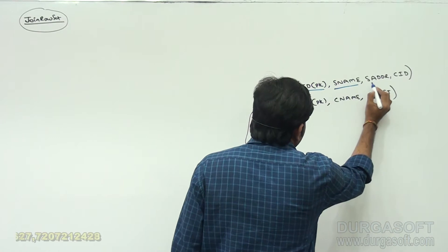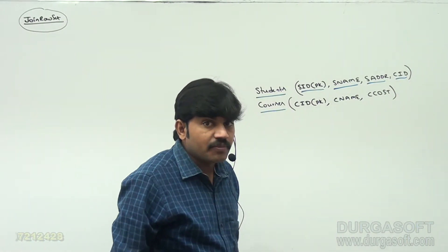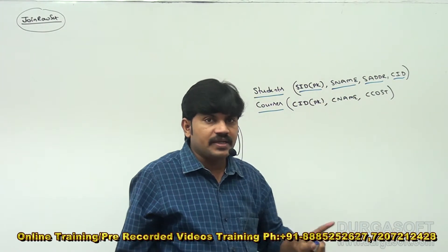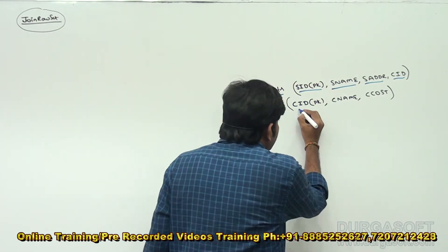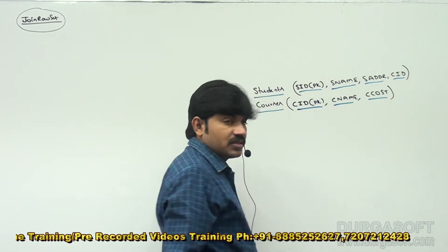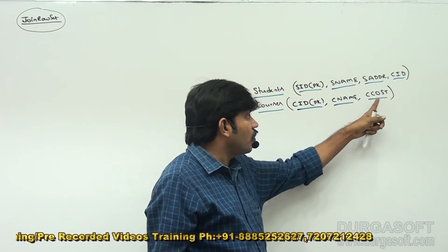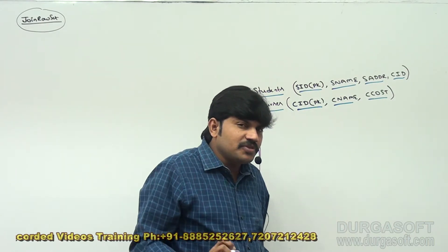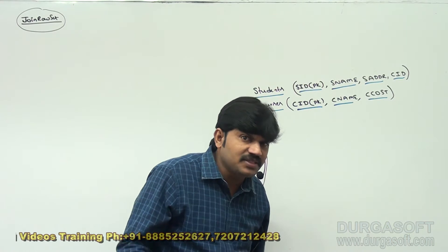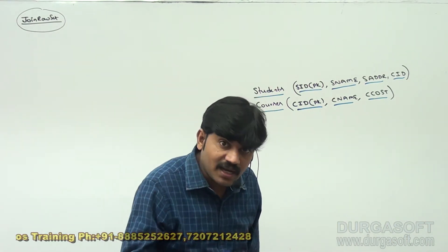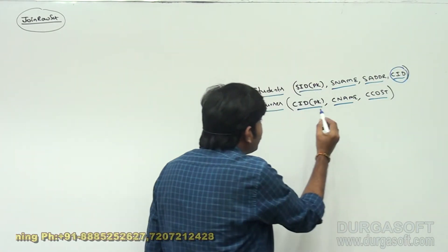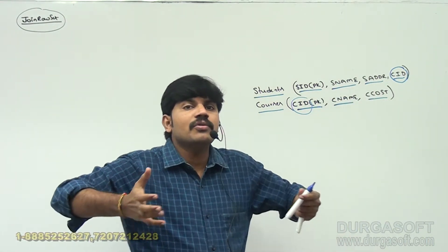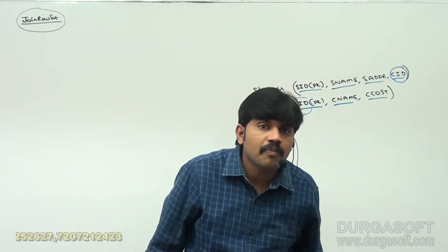The students table has four columns: student_id (which is the primary key), student_name, student_address, and course_id. The courses table has: course_id, course_name, and course_cost (the fees of the course). Have you observed — is there any common column in these two tables? Yes! The common column is 'cid' (course_id), present in both tables. Based on this common column, we want to combine the two rowsets into a single rowset.